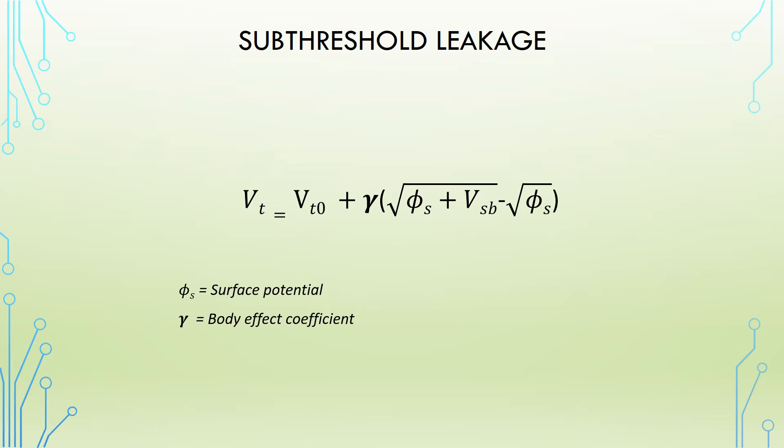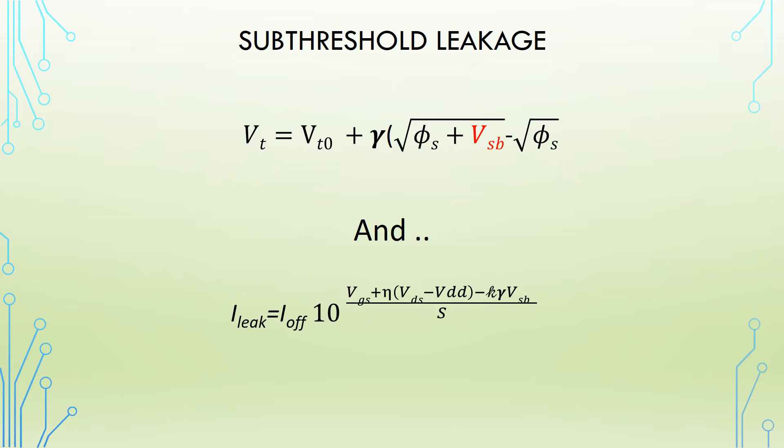Now, sub-threshold leakage current flows when a transistor is supposed to be off. Given the equation in that case, where I_off is the sub-threshold current at V_gs = 0 and V_ds equal to V_dd, and knowing that the other parameters in this equation are constant, we can simplify it.